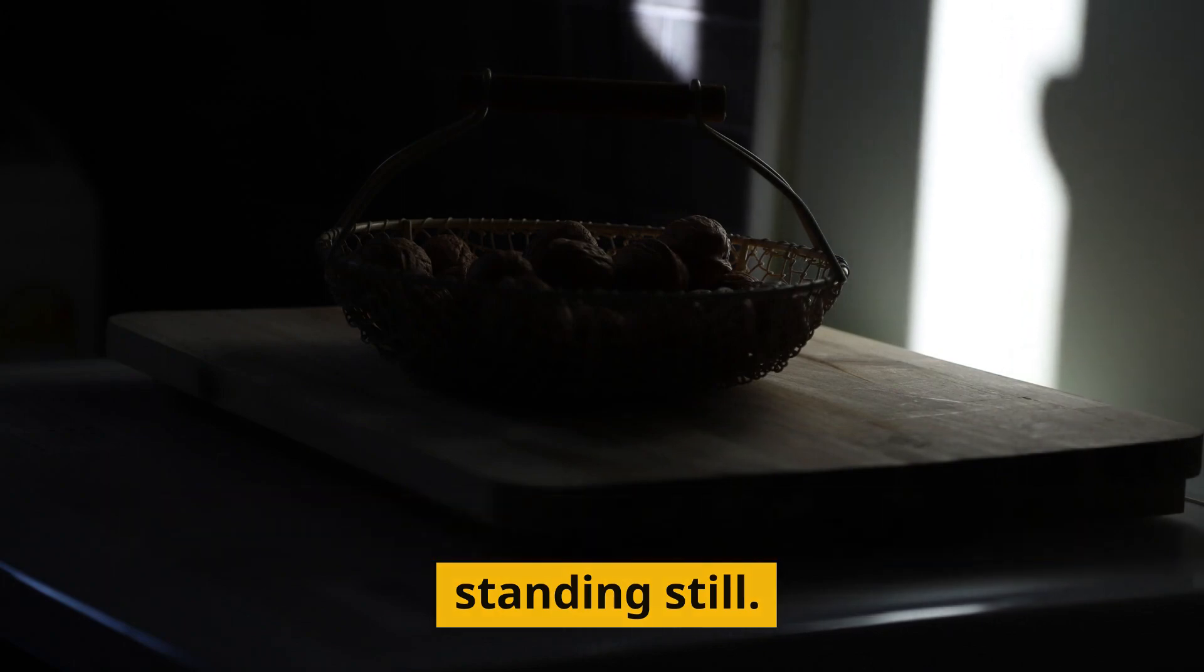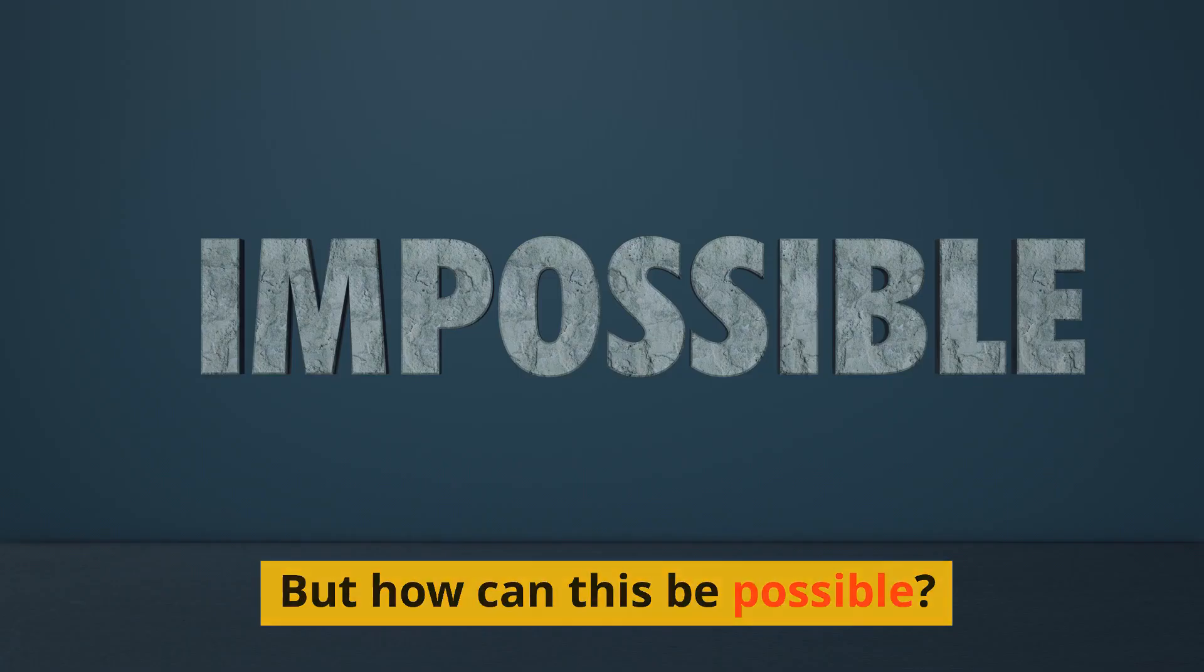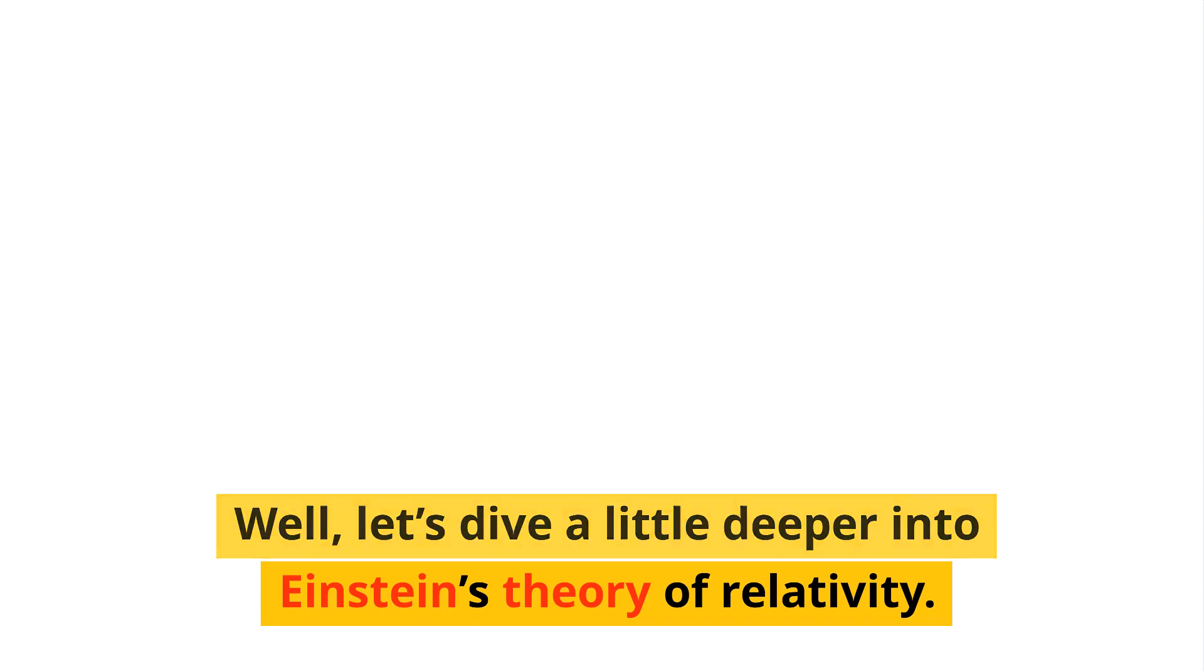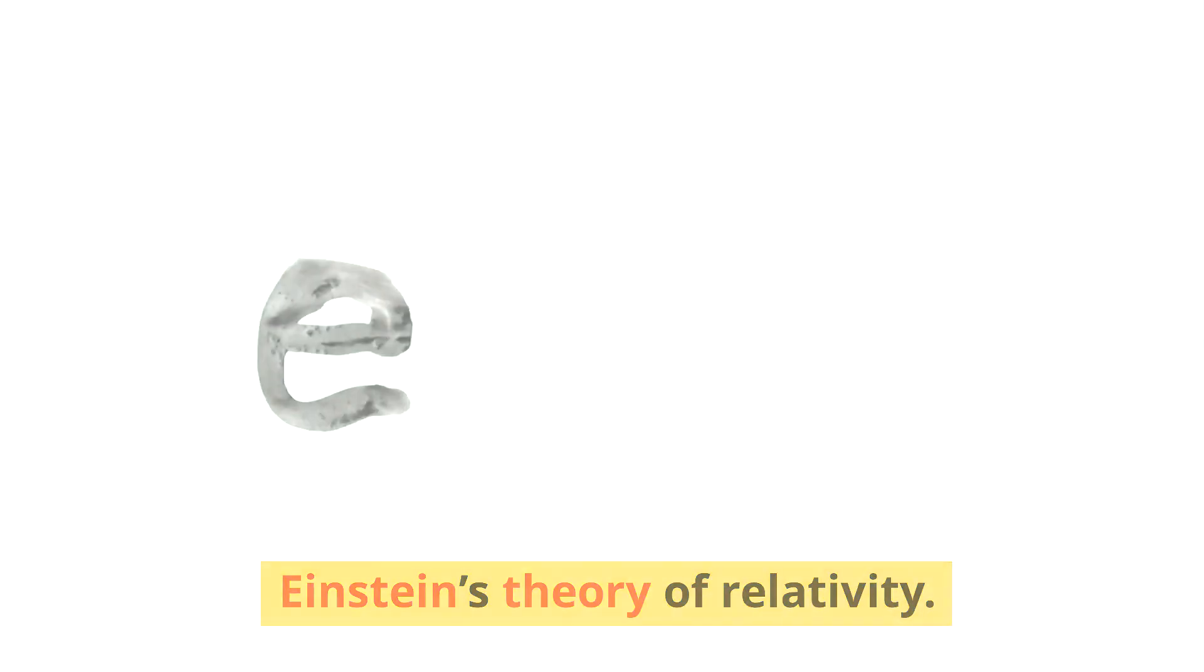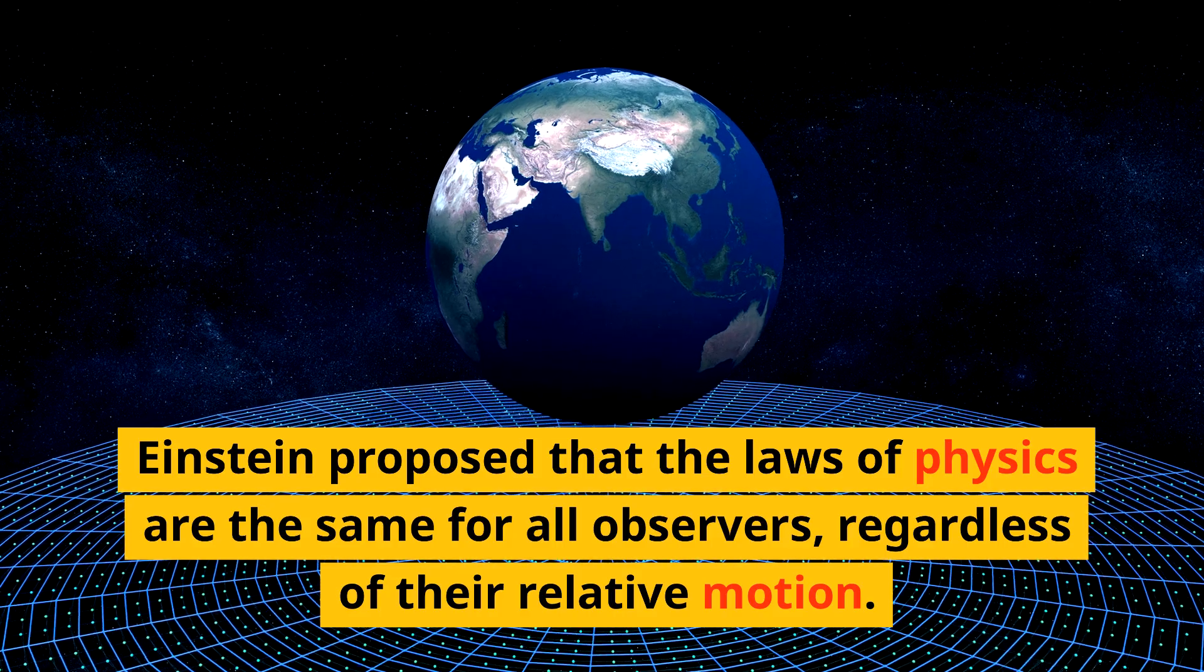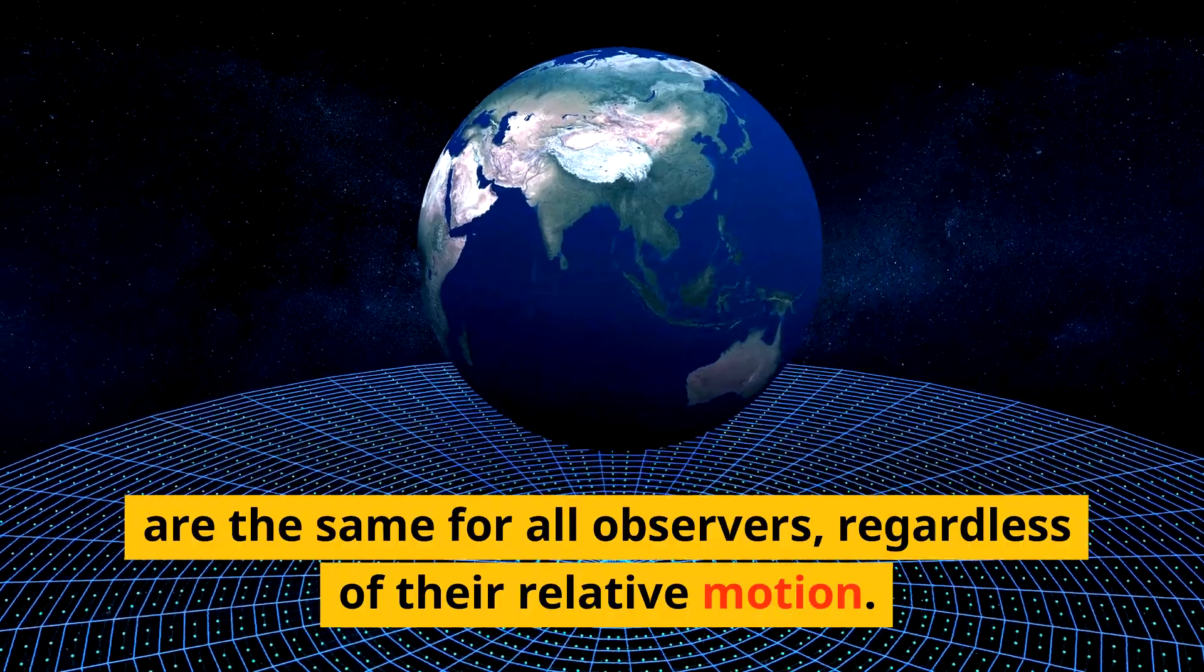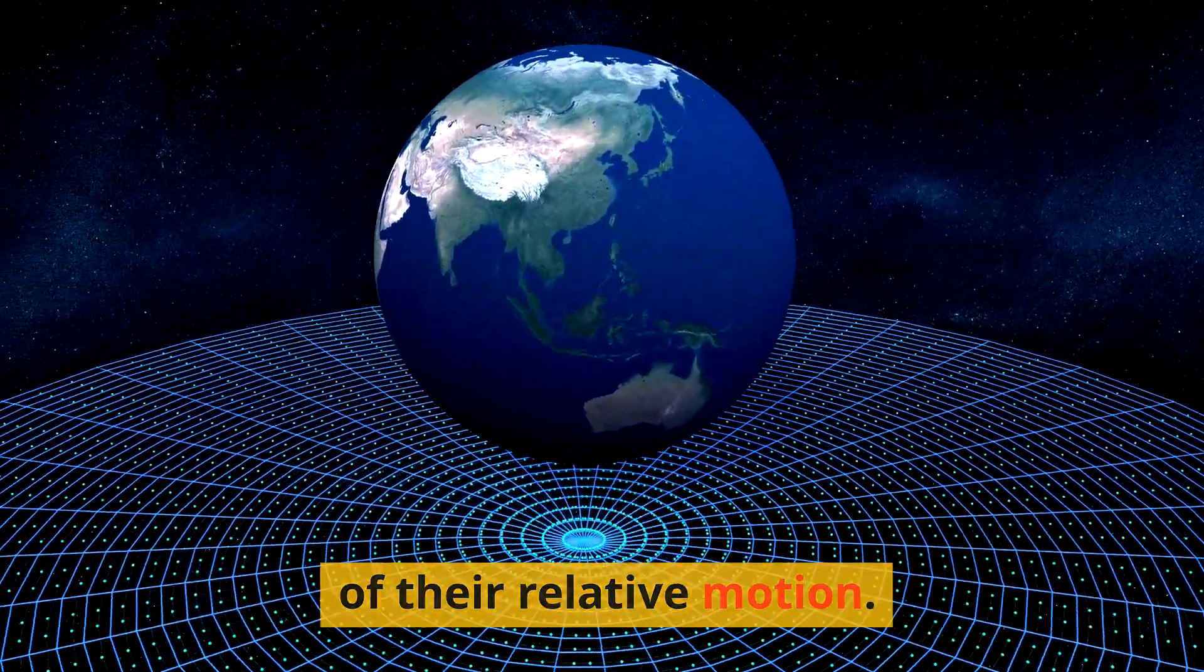But how can this be possible? Well, let's dive a little deeper into Einstein's theory of relativity. Einstein proposed that the laws of physics are the same for all observers, regardless of their relative motion.